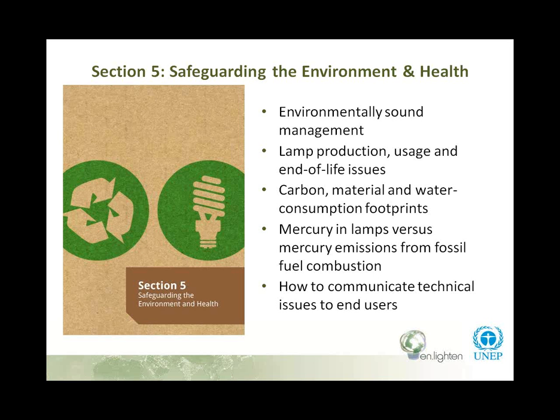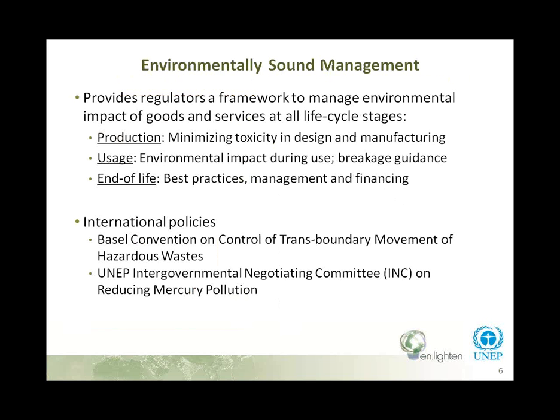Mercury in lamps is an issue that people raise. They're very concerned about mercury, but we also balance this with the reduction in mercury emissions from reduced fossil fuel combustion — the chapter gives a lot of references and details. It also gives advice on how to communicate technical issues to end users. We look at three parts of the life cycle: in production, minimizing toxicity in design and manufacturing; during usage, information on breakage and what to do if a lamp with mercury breaks; at end-of-life, best practices for management and financing a sustainable spent-lamp program.